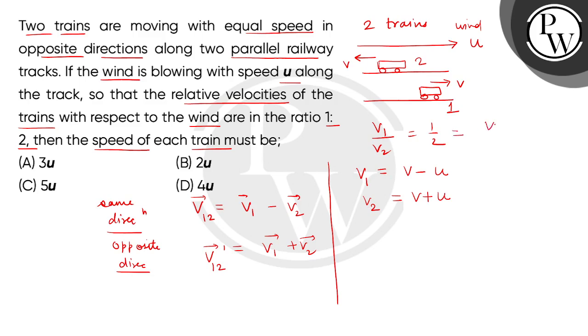This will be V minus U divided by V plus U. We cross multiply. So we will make V plus U is equal to twice V minus twice U.